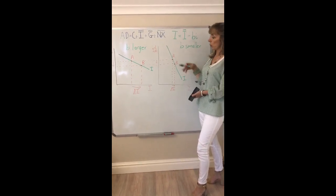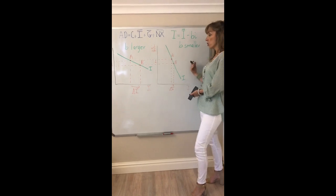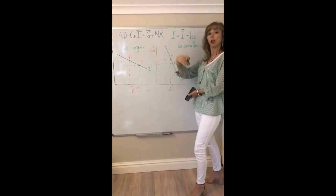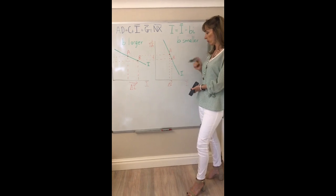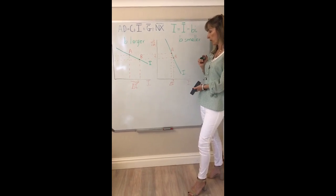And why do we care about that? We care because this in turn is going to affect how much aggregate demand and income changes in the economy and will affect the slope of our IS curve.